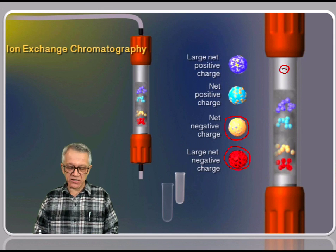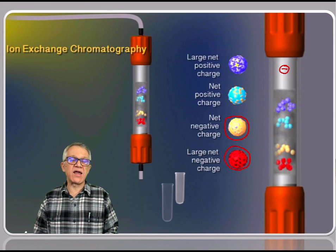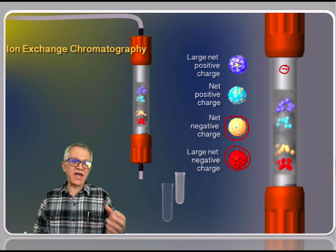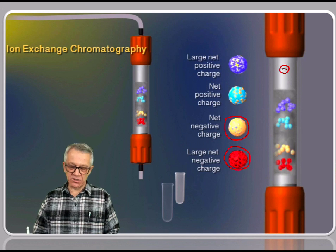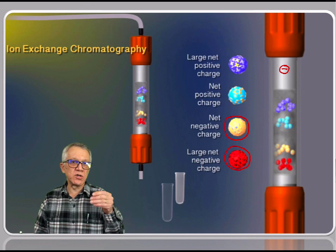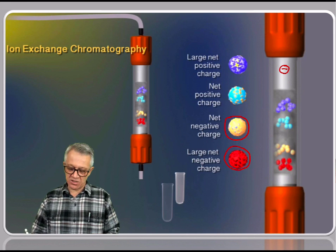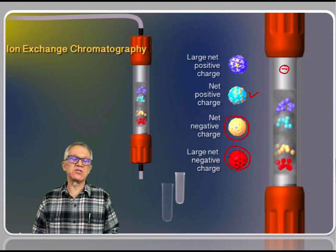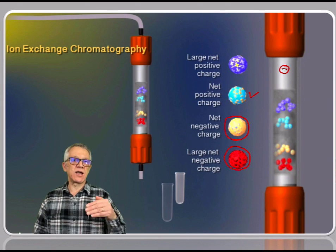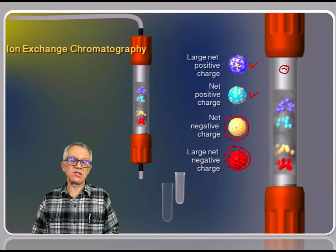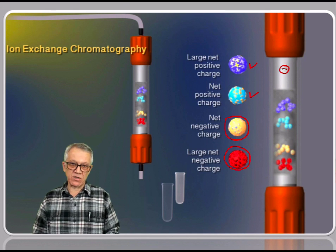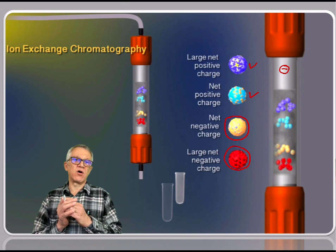In this case, the two proteins depicted in blue and cyan. The one with the larger net positive charge is going to bind more tightly to the column, therefore it needs a higher salt concentration to elute from the column. Therefore, the cyan protein is going to come off before the blue protein, because retention time is related to the tightness of the binding of the protein with the stationary phase.